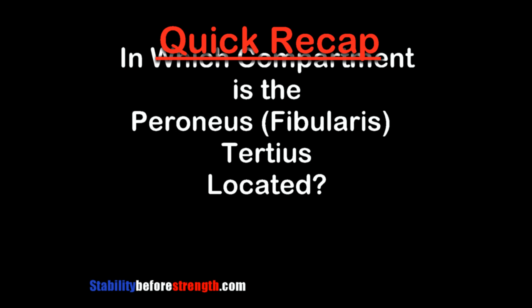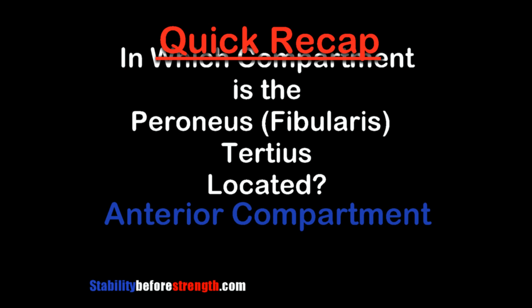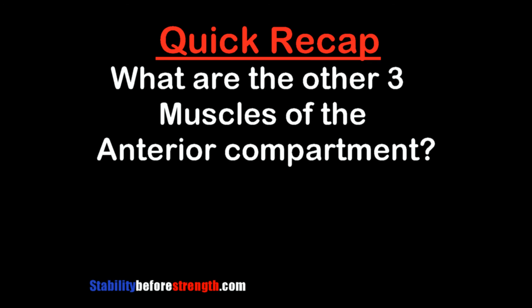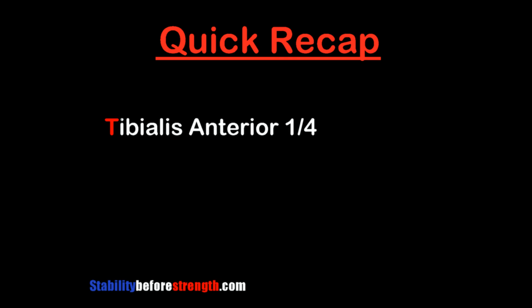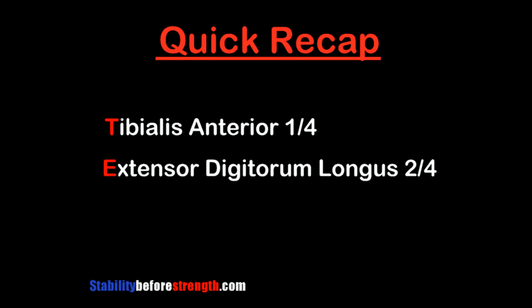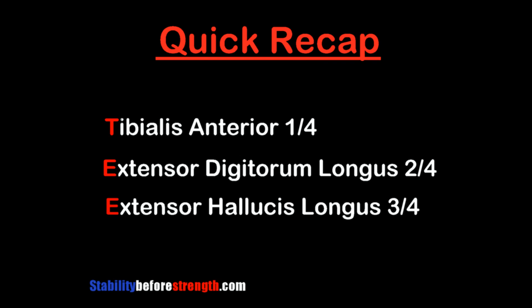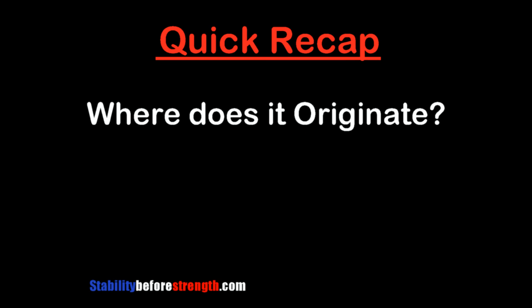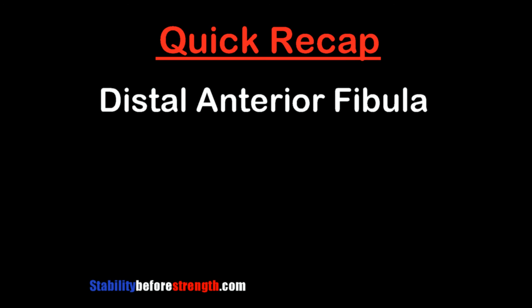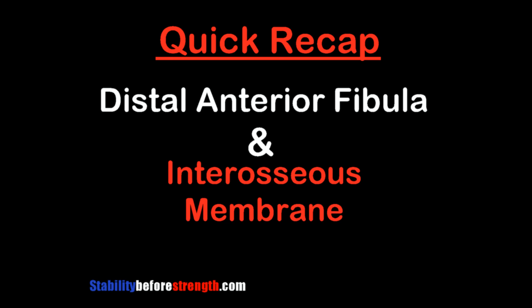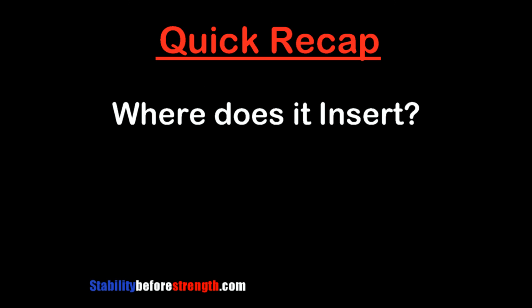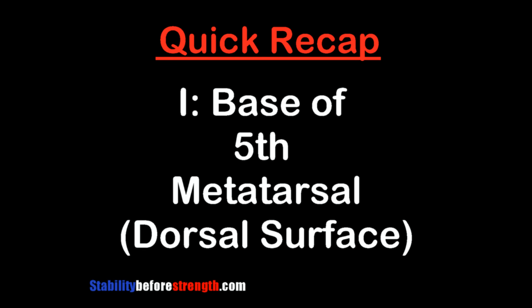Let's quickly recap everything we learned. Where is the muscle located? In the anterior compartment. What are the other three muscles of the anterior compartment? The tibialis anterior, the extensor digitorum longus, and the extensor hallucis longus. Where does it originate? The distal anterior fibula and interosseal membrane. Where does it insert? The base of the fifth metatarsal, dorsal surface.